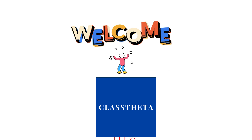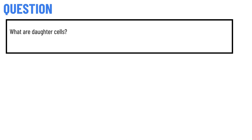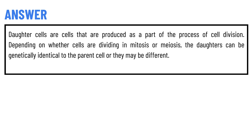Our today's question is: what are daughter cells? The correct answer is that daughter cells are cells that are produced as a part of the process of cell division, depending on whether cells are dividing in mitosis or meiosis.